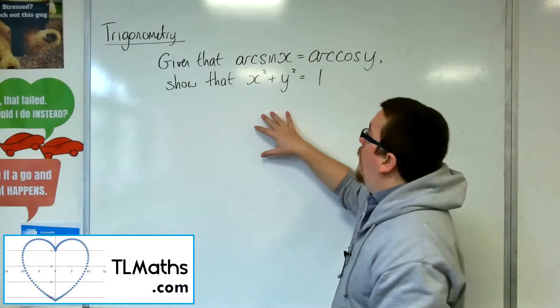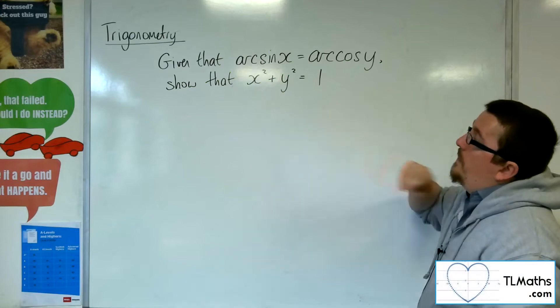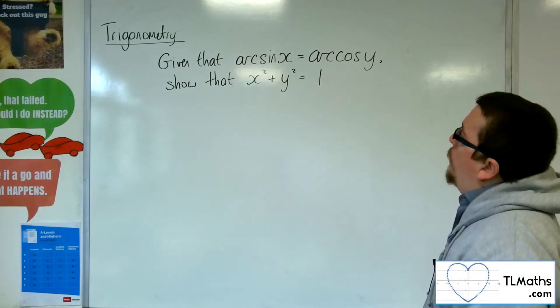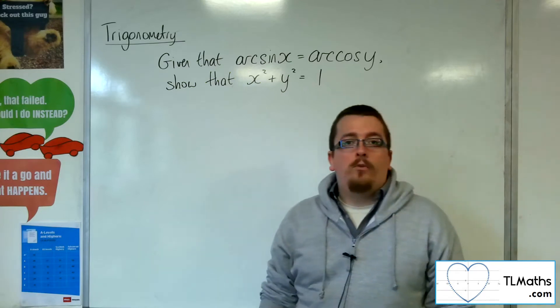So we're going to have a look at this quite peculiar looking question. Given that arcsin x equals arccos y, show that x² + y² = 1.